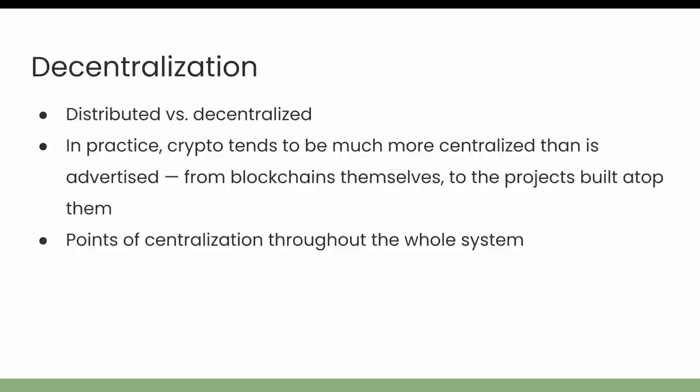There are points of centralization throughout the whole system. Not only are the blockchains fairly centralized, but many people and projects interacting with blockchains are not doing so directly by operating a node — they use APIs provided by a small handful of very widely used companies, placing trust in those centralized API maintainers. Beyond that, the projects themselves are often highly centralized. Coinbase, Binance, FTX, and OpenSea are all examples of companies that control a very large amount of the cryptocurrency ecosystem in a quite centralized, typical corporate way.